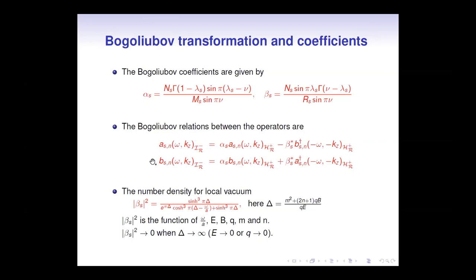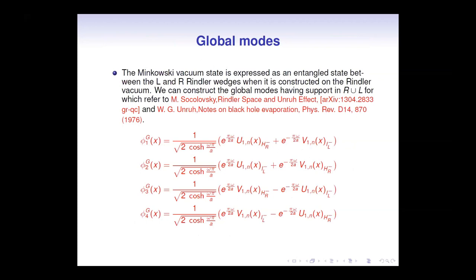Using these Bogoliubov transformations, we find that the number density for the local vacuum is given by |beta|^2_s, which is a function of omega/A, E (the electric field strength), B (the magnetic field strength), Q (the charge), M (the mass), and N (the Landau level). We find that when the electric field goes to zero or the charge goes to zero, this number density goes to zero. So whenever there is no electric field, there is no pair creation for the local vacuum.